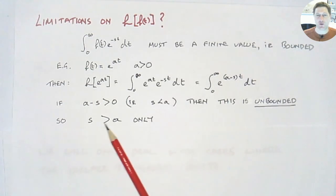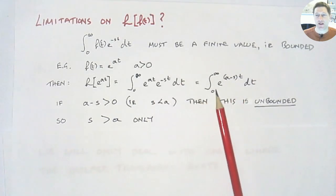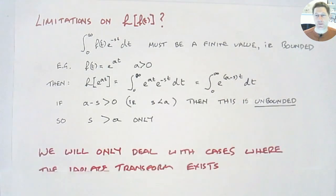We can only find the Laplace transform if s is greater than a. So if s is greater than a, that means that term is negative. And as we turn to infinity, the term will tend to 0, and that gives us a bounded answer. Happily, this doesn't happen very often. And in our course, we're only going to deal with cases where the Laplace transform exists. So you know that there are limitations on it, but we're not going to have to be checking for those all the time.